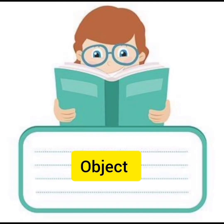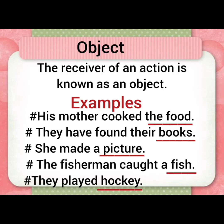Then next I have object — the receiver of an action is known as an object. For example, 'His mother cooked the food.' His mother is subject, cooked is verb, and the food is the object. 'They have found their books' — books is the receiver of the action. 'She made a picture' — picture is the object. 'The fisherman caught a fish' — fish is the receiver of the action. 'They played hockey' — subject played is verb and hockey is the object.